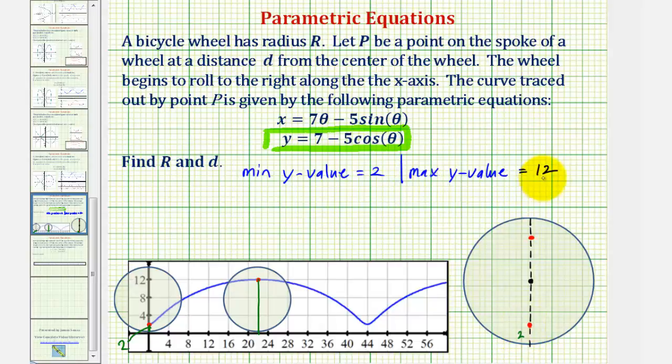And then because the maximum y value is 12, we know this distance here is 12 units. So if we enlarge this, we know that this length here is 12 units, but the short piece is two units,